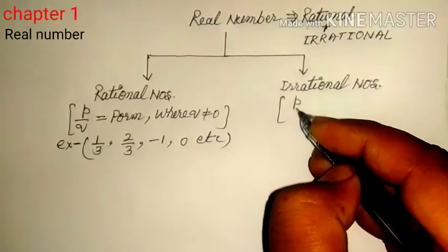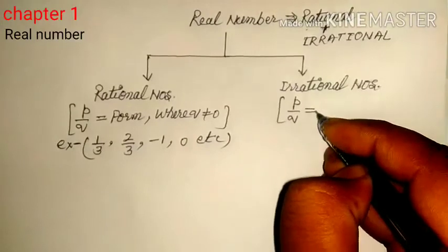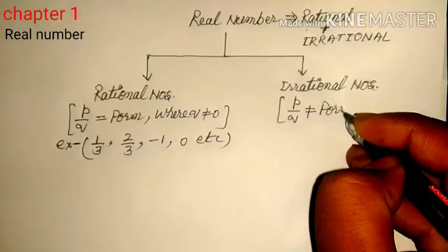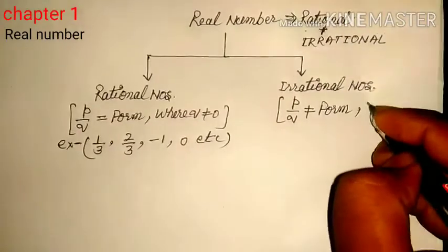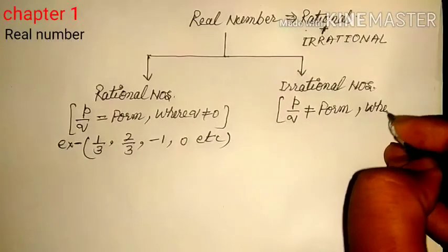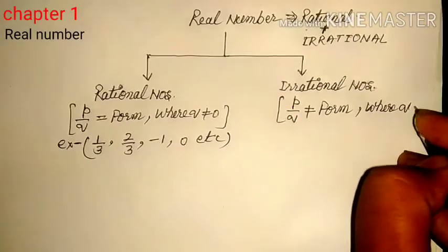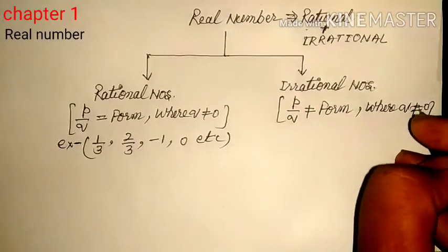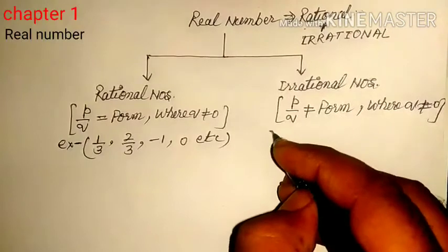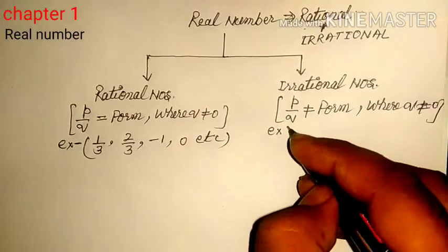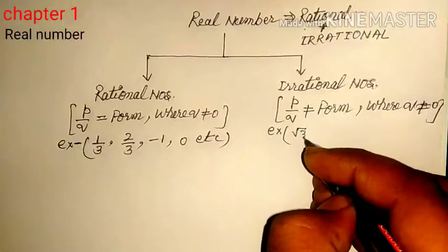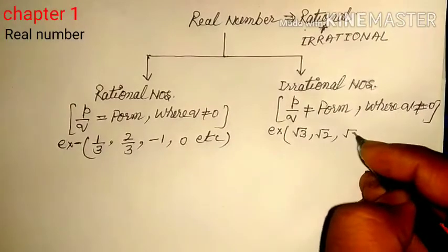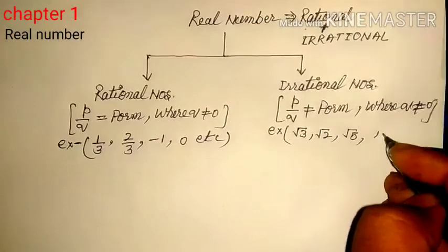And what about irrational numbers? An irrational number is a number which cannot be written in the form of P upon Q, where Q does not equal zero. Examples include root 3, root 2, root 5, and Pi.